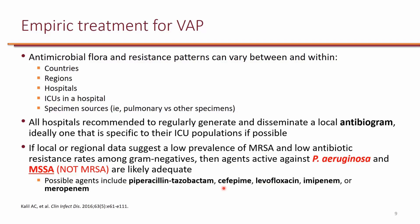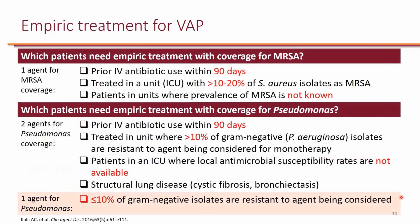While these agents do not cover MRSA, if local resistance patterns suggest MRSA-related VAP is unlikely, it is acceptable to use them. Who exactly needs empiric coverage for MRSA? Patients who have received prior IV antibiotics in the past 90 days need one agent with MRSA coverage — typically vancomycin. Also, patients with VAP in ICUs where MRSA prevalence exceeds 10–20%, or where prevalence is unknown, need one MRSA-active agent.